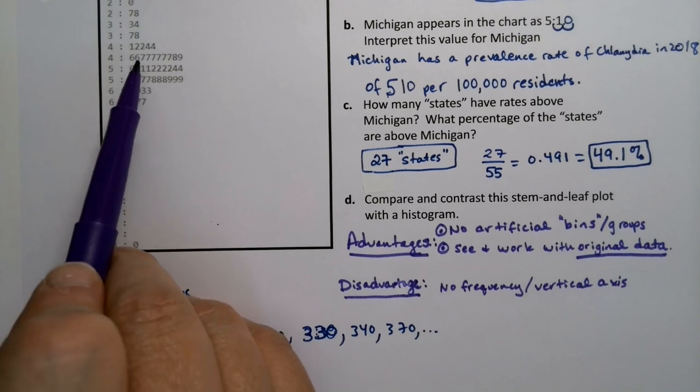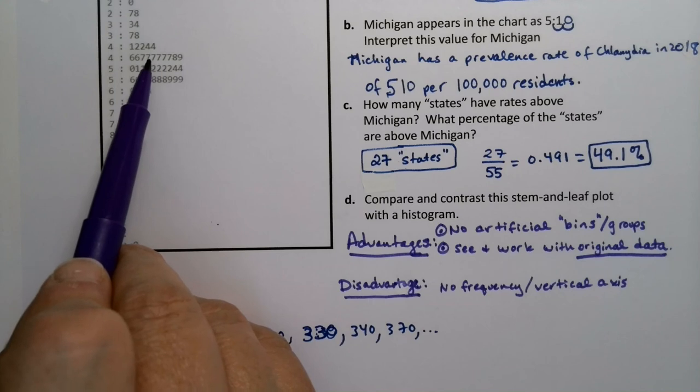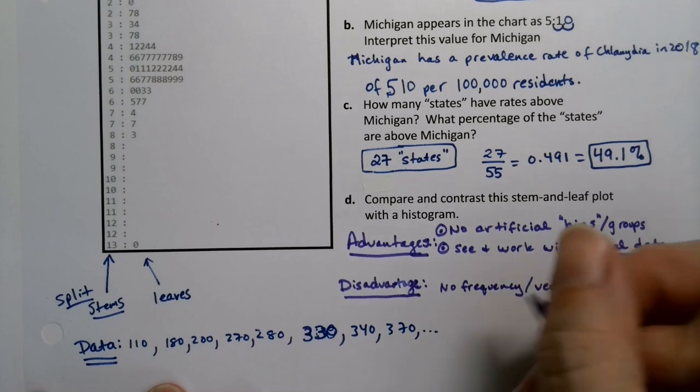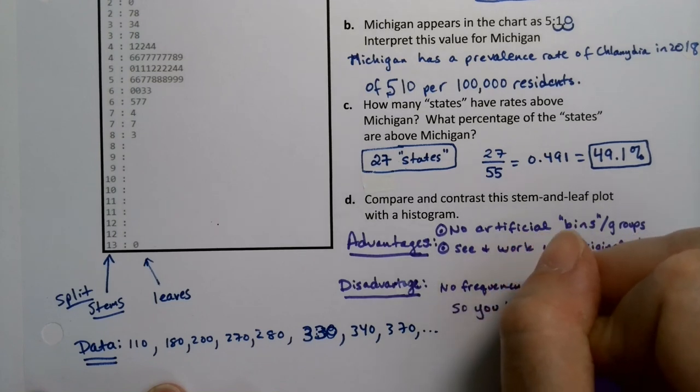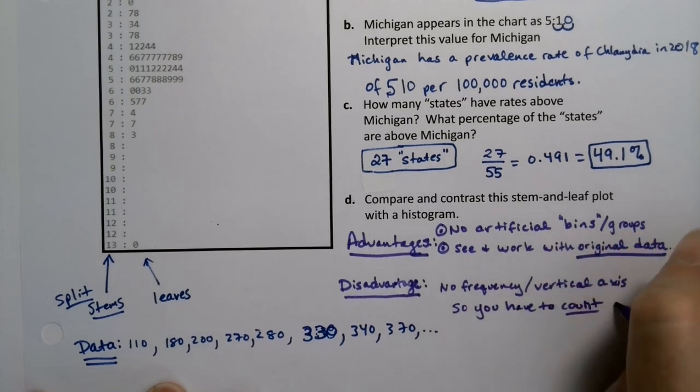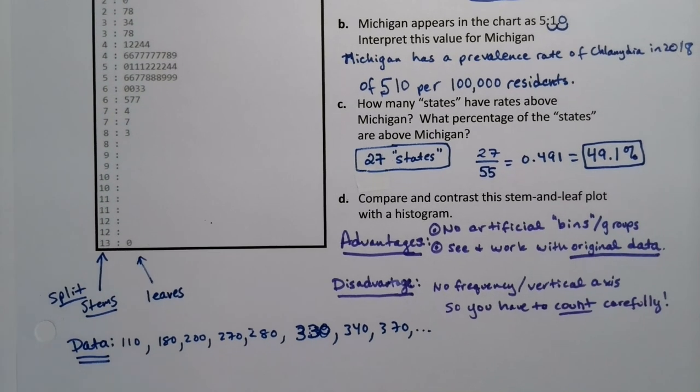You have to sit there and be like, all right, I'm counting one, two, three, four, five. Oh wait, did I get all those sevens? Maybe I got, I got to go back and start again. Right? So there's no frequency or vertical axis. So you have to count, and you have to count carefully.